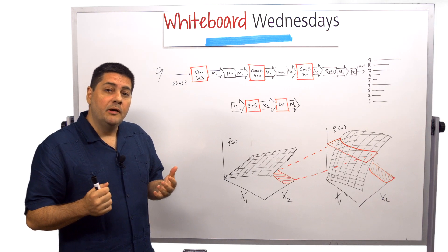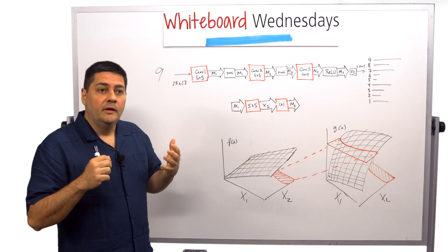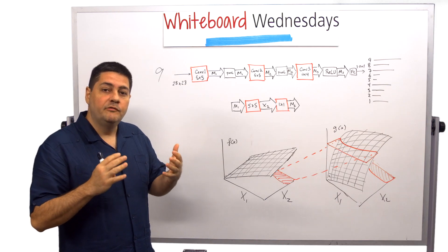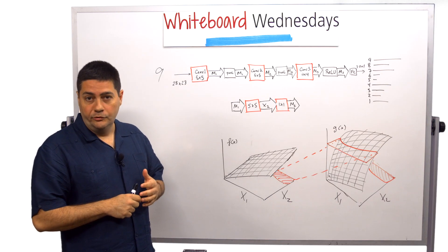Today we're going to be talking about the method that we developed here at Cadence for the reduction of complexity of a convolutional neural network.